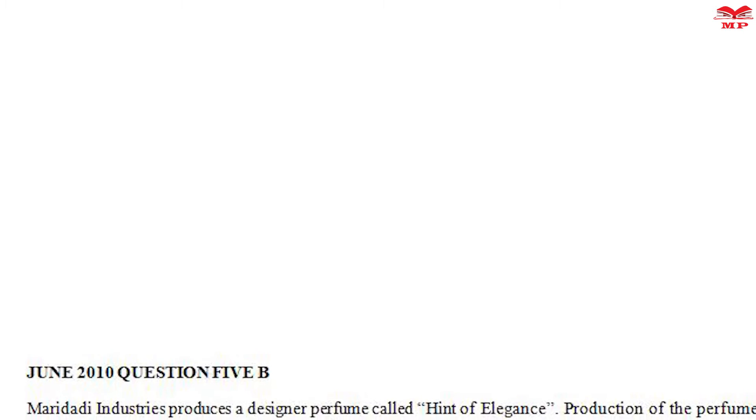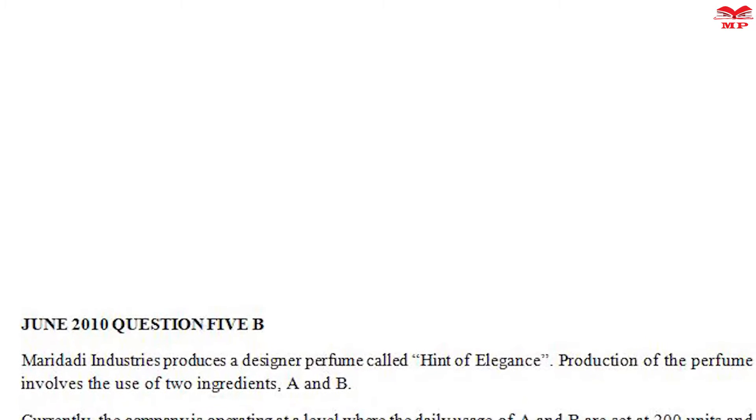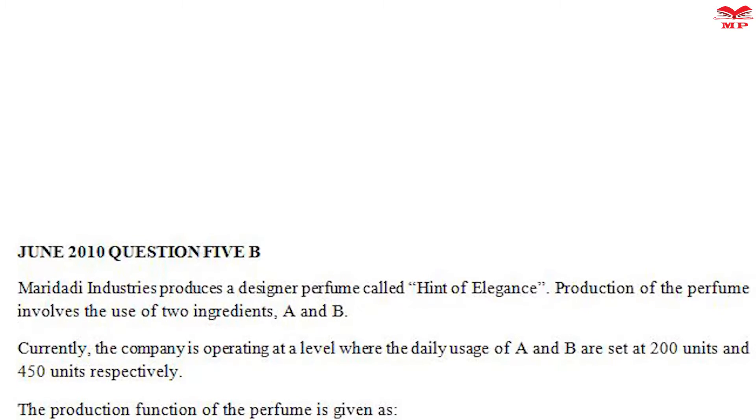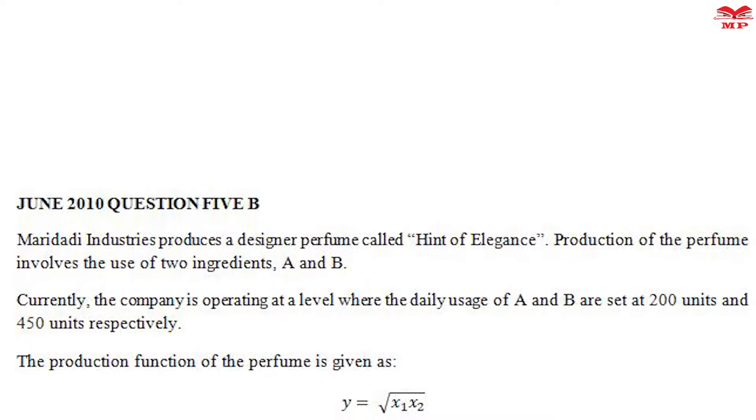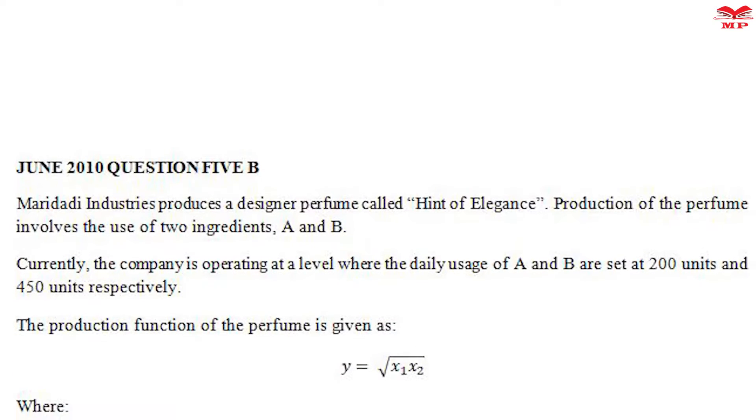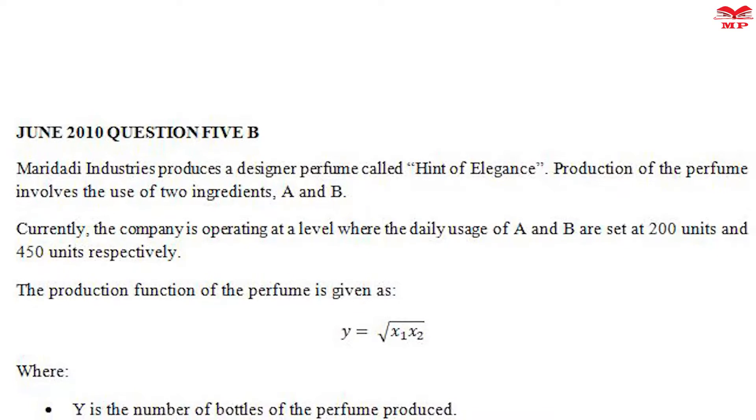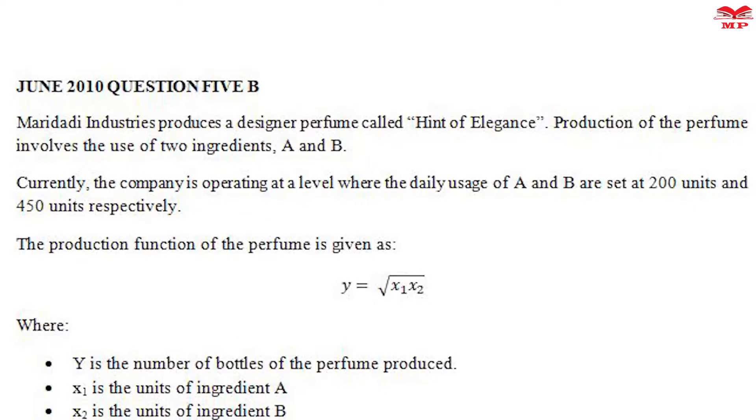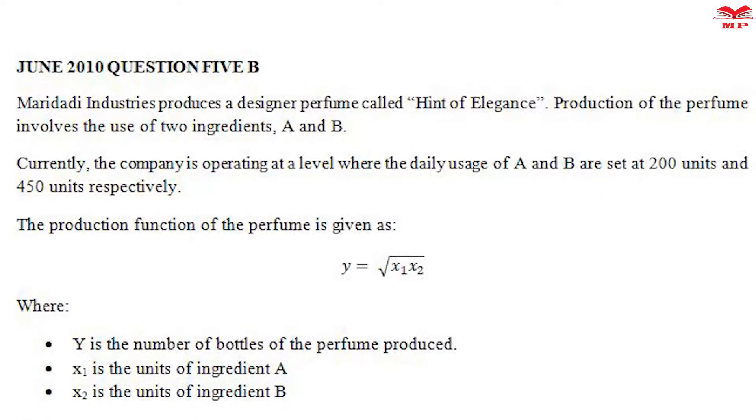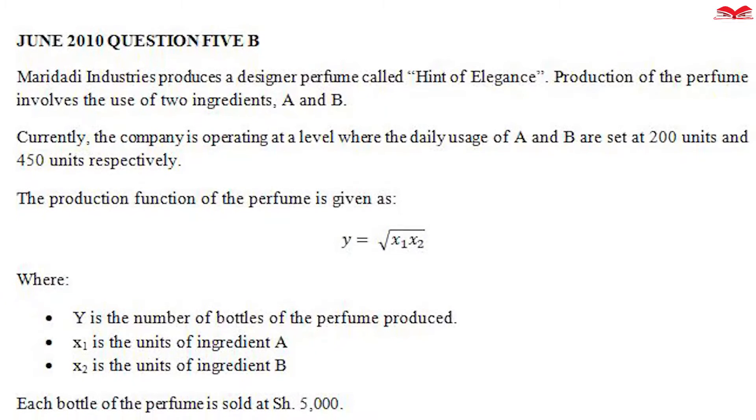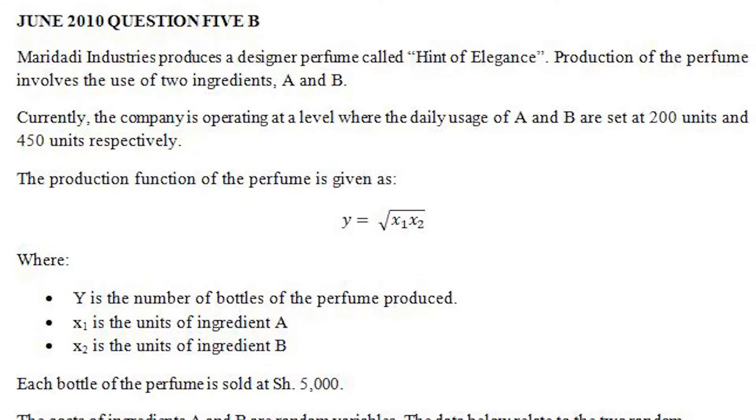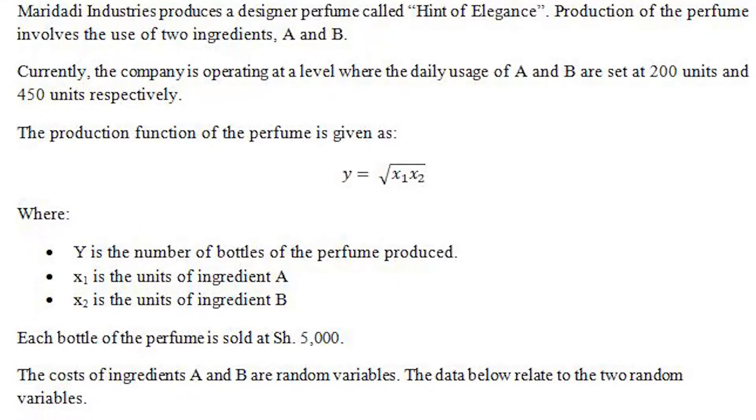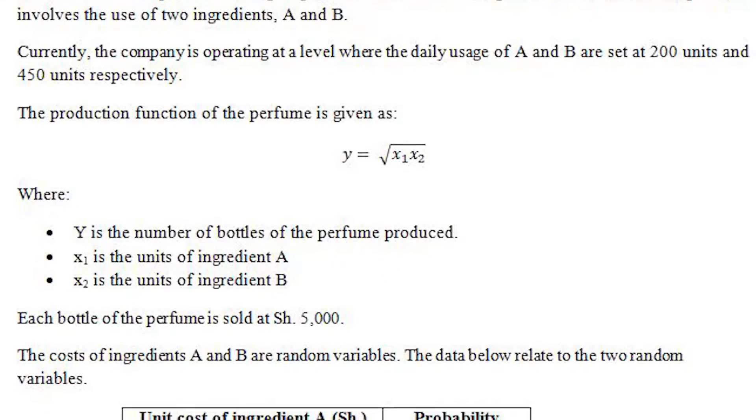Maridadi Industries Limited produces a designer perfume called Hint of Elegance. Production of the perfume involves the use of two ingredients, A and B. Currently, the company is operating at a level where the daily usage of A and B are set at 200 units and 450 units respectively. The production function of the perfume is given as y equals square root of x1 times x2, where y is the number of bottles of the perfume produced, x1 is the units of ingredient A, x2 is the units of ingredient B.